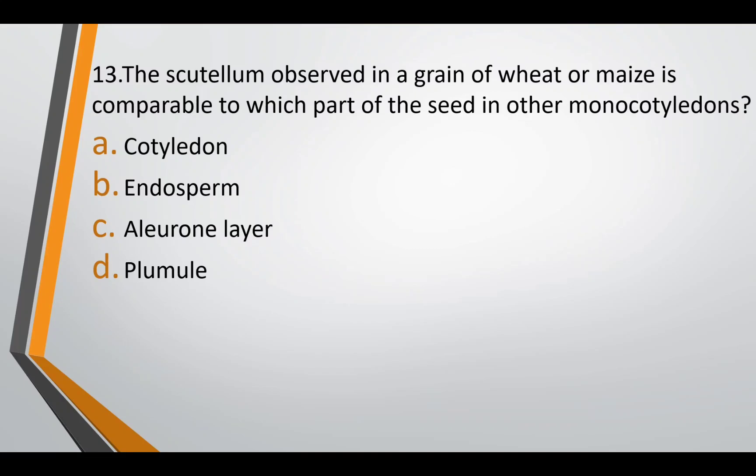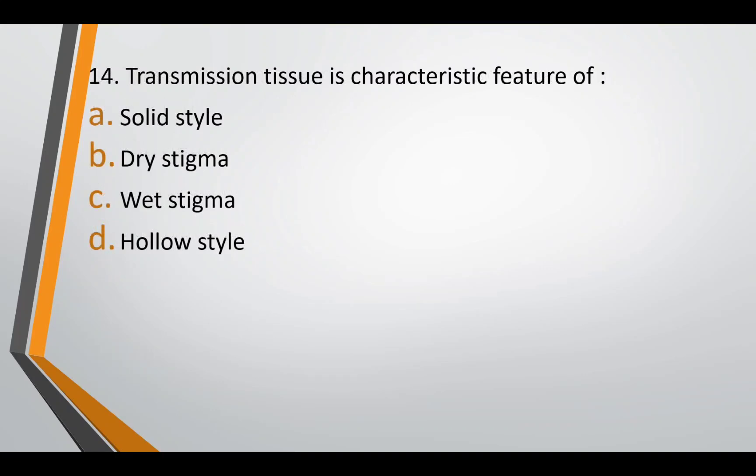Question thirteen: the scutellum observed in a grain of wheat or maize is comparable to which part of the seed of other monocotyledons? The correct answer is option A — cotyledon. Question fourteen: transmission tissue is a characteristic feature of — solid style, dry stigma, wet stigma, or hollow style.